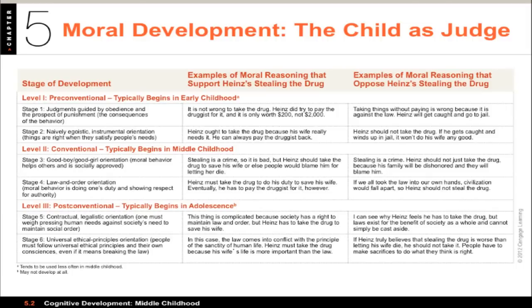The third level is the post-conventional level, where moral reasoning is based on the person's own moral standards. Kohlberg said this level doesn't always develop, and if it does, it would be found among adolescents and adults. For instance, at the stage of universal ethical principles, he should steal the drug because the law comes into conflict with the principle of the sanctity of human life, and that takes precedence. On the other hand, one may feel he must let his wife die because it is a virtuous principle to not steal.